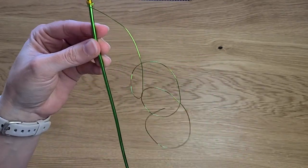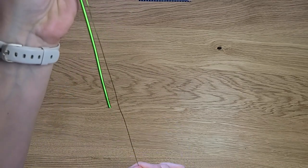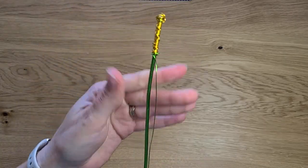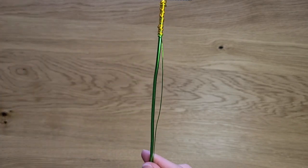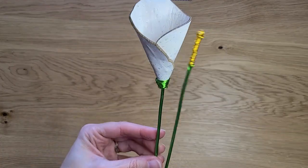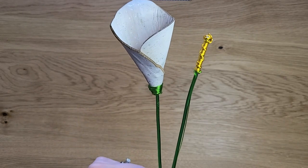The rest of this wire is going to be left loose for the moment. It's going to be used later to wrap the flower to the stem.